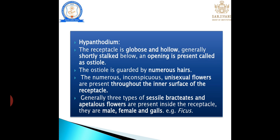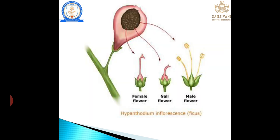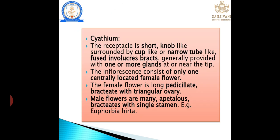Inside the hypanthodium receptacle, three flower types are always present: gall flowers (sterile flowers), male flowers, and female flowers performing their respective functions. Cyathium: a type of inflorescence having a short, knob-like structure surrounded by a cup-like involucre formed by fused bracts, generally provided with one or more glands at the top.